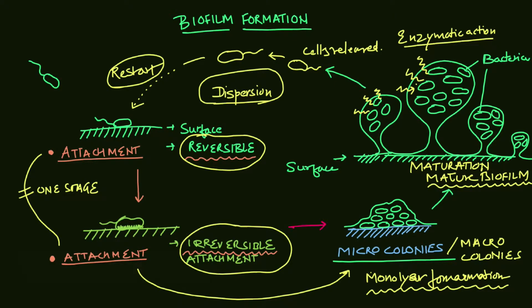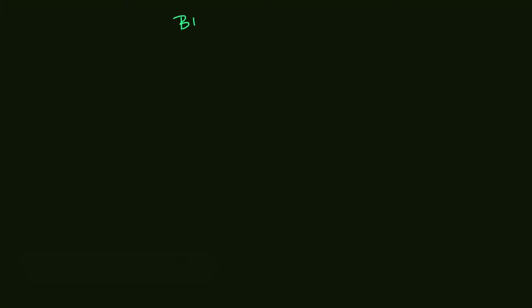We'll discuss the stage of attachment, which includes reversible attachment as well as irreversible attachment. After that, micro colony formation and then the mature biofilm stage. Immediately after the mature biofilm stage we'll discuss the process of dispersion. Let's start the discussion of biofilm formation.